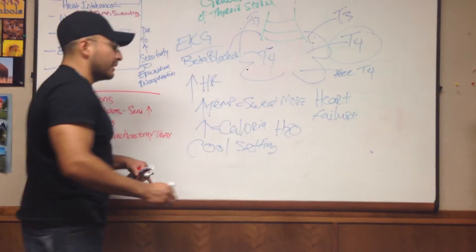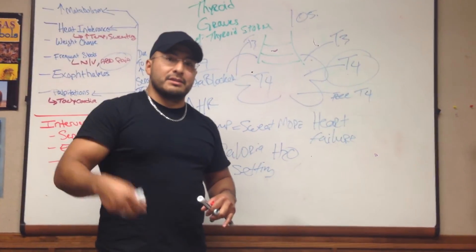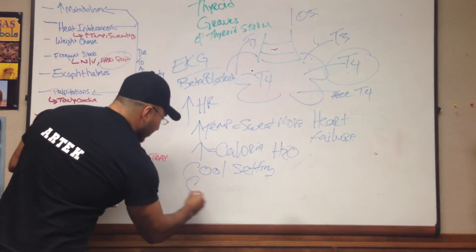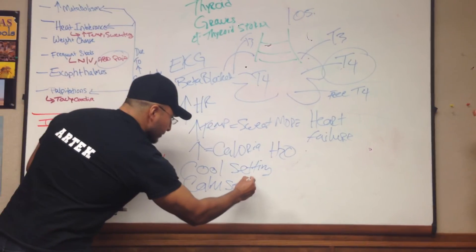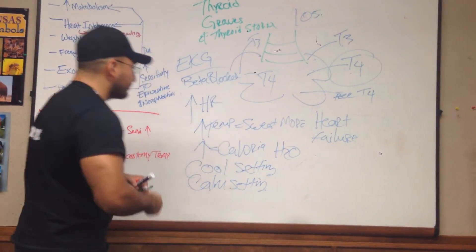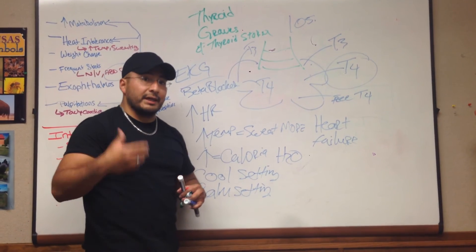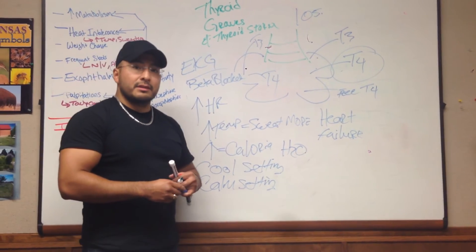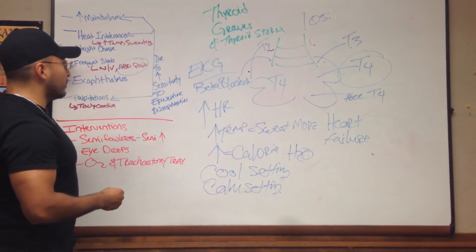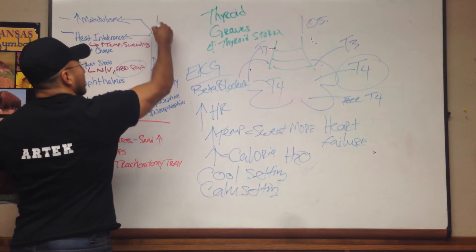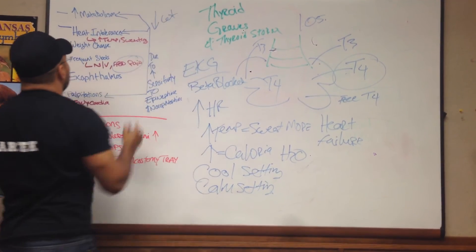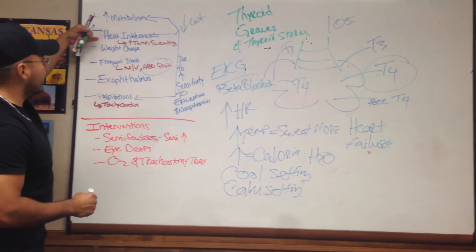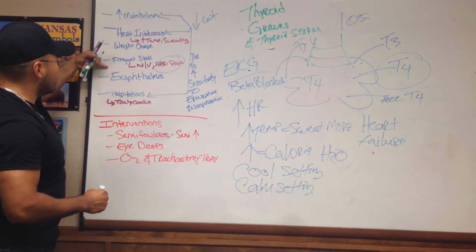And you want to make sure that they're in a calm setting because these patients are already agitated as it is. I mean they're just super, super hyper, on the go all the time. So you want to provide a calm setting. Another intervention for you there. The other thing is you want to provide high calorie, high protein, high carb meals. Because again they're running through all this nutrition. So most of these patients you'll notice or you should see something called decrease in weight or weight loss. So there would be a weight change. So we talked about increased metabolism, heat intolerance, weight change, frequent stools.